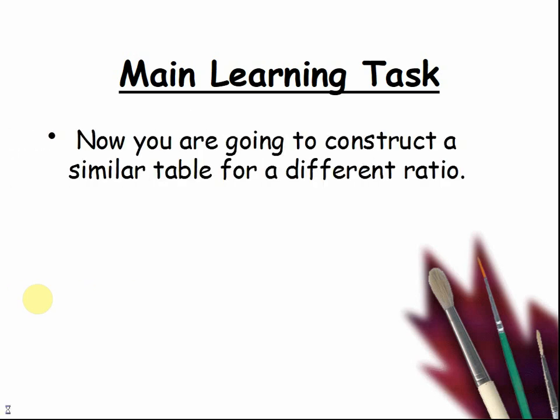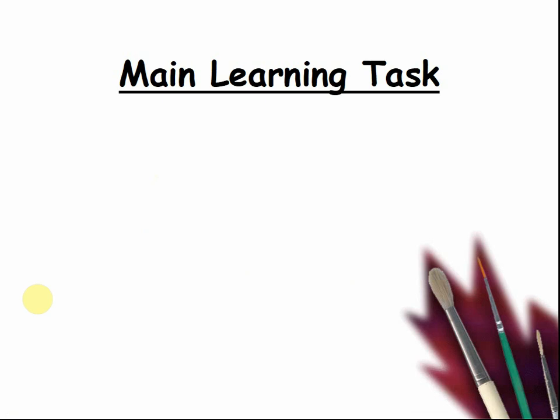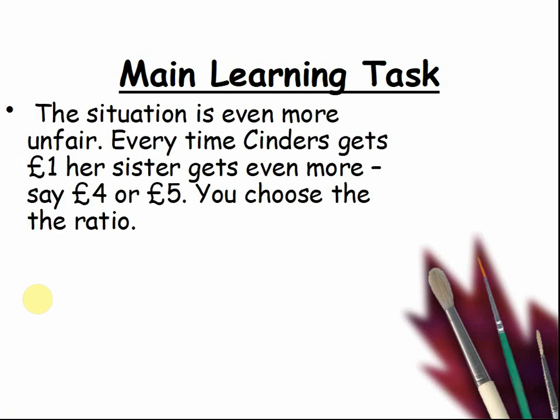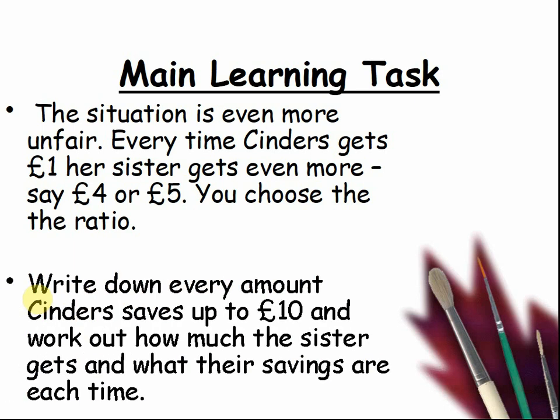Now for the main learning task: you are going to construct a similar table for a different ratio. This situation is even more unfair. Every time Cinders gets one pound, her sister gets even more — say four or five pounds; you choose the ratio. Write down every amount Cinders saves up to ten pounds, and work out how much the sister gets and what their savings are each time. Pause the video and work it out.